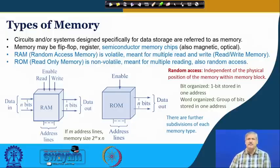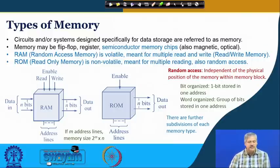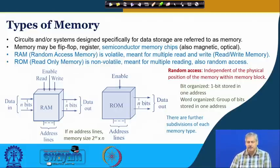In semiconductor memory chips we have mainly two kinds. One is called RAM — random access memory. This memory is volatile, meaning if power goes off the value gets lost, and it is easy to write and read. Multiple read and write operations are possible, for which it is also called read-write memory. In contrast, we have ROM — read only memory — which is non-volatile and meant for multiple reading. It has to be written once with some special effort or mechanism. From the end user's point of view, it can be read many times, but from the developer's point of view, writing requires a special mechanism.